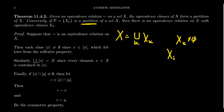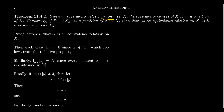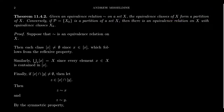Every equivalence relation on a set gives us a partition, and every partition gives us an equivalence relation — the two notions are logically equivalent. Given an equivalence relation tilde on a set X, the equivalence classes [x], [y], [z], etc. form a partition on the set. Conversely, given a partition P = {Xₖ} of X, we define a relation by saying two elements are equivalent if they live inside the same cell of the partition. Let's prove both directions.